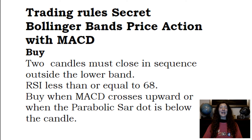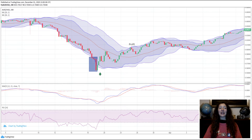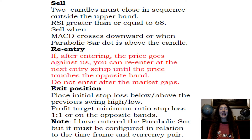Buy rules: Two candles must close in sequence outside the lower band. RSI less than or equal to 68. Buy when MACD crosses upward, or when the Parabolic SAR dot is below the candle.